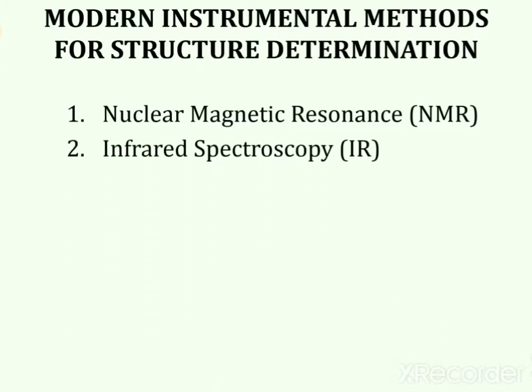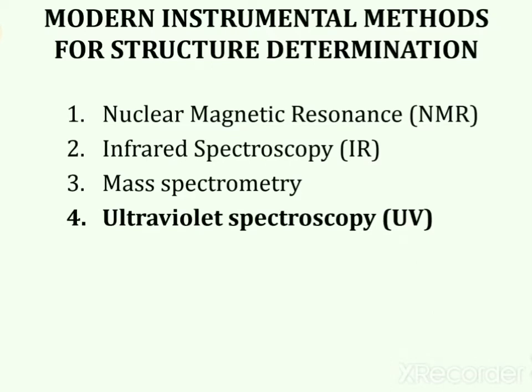Infrared Spectroscopy, known in short form as IR Spectroscopy, is used for the determination of functional groups and molecular mass. Next is Ultraviolet and Visible Spectroscopy, used for the determination of conjugation of compounds, known in short form as UV-Visible Spectroscopy.